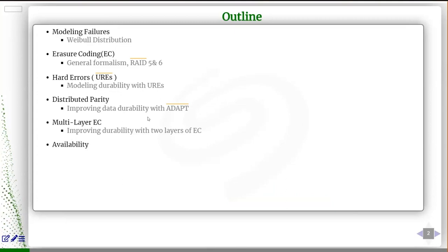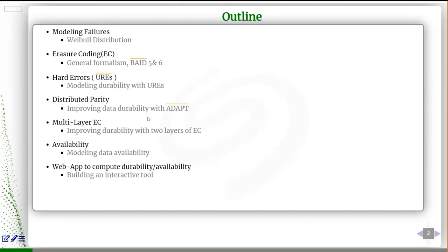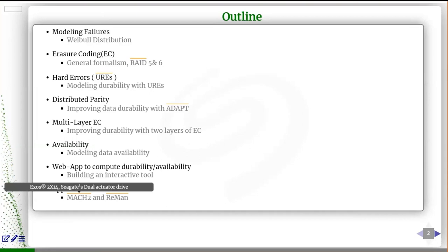Until now everything will be related to durability, and I dedicate one slide to analyzing availability. Finally, I want to show a glimpse of a web application that puts all these results together, which is Seagate internal at this moment. I've also included a couple of things in the backup — one related to the dual actuator, which is two times faster than a regular drive, and another related to REMAP, which allows drives to continue even if they lose one or two heads.